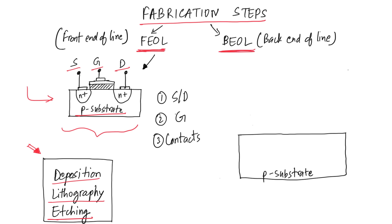We can break down the fabrication for this NMOS in three steps. The first is the creation of the source and the drain regions as shown here. The second is the creation of the gate and the dielectric layer. And the third is creating the metal contacts for source, gate, and drain.